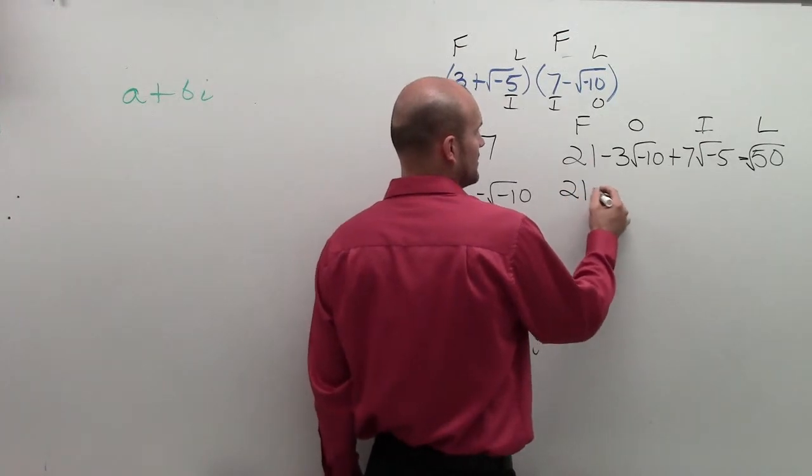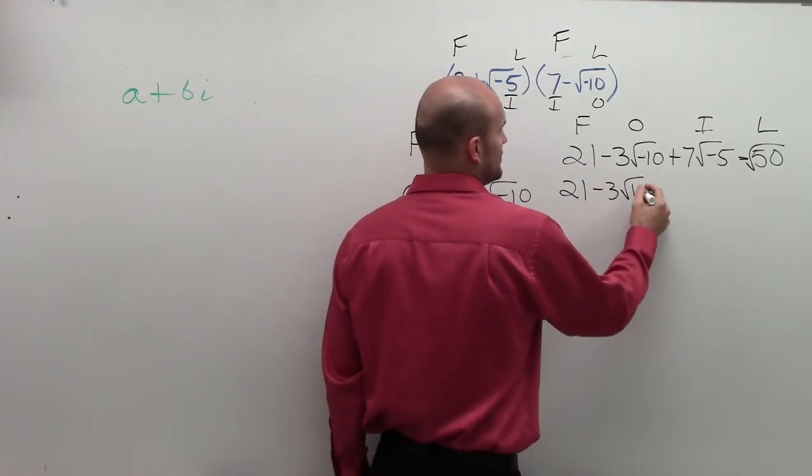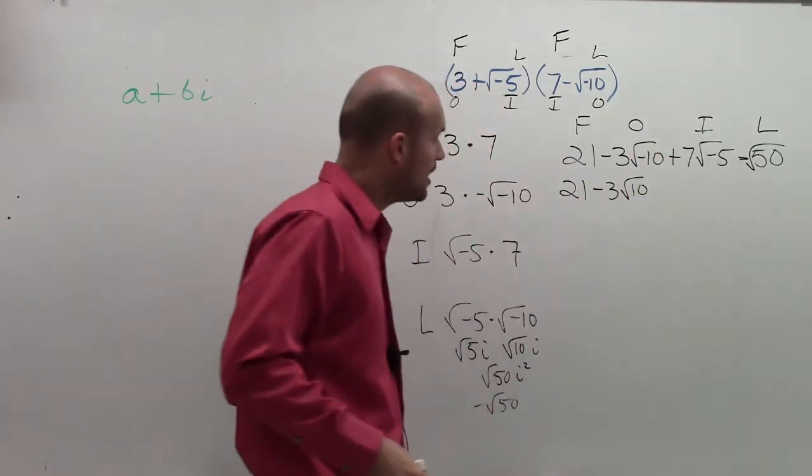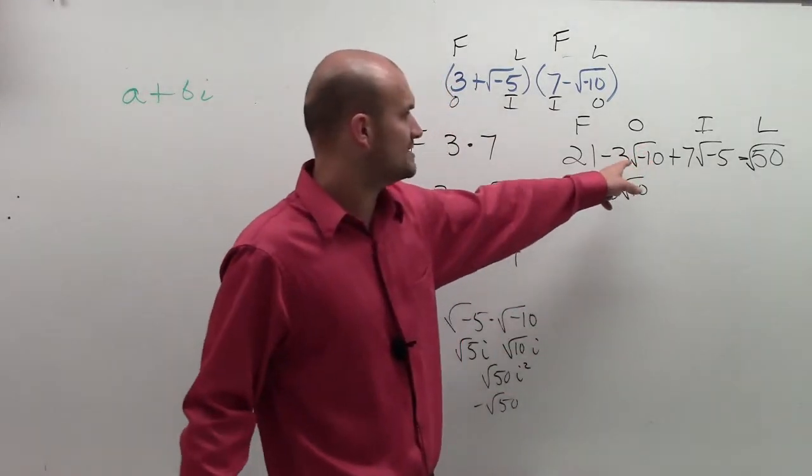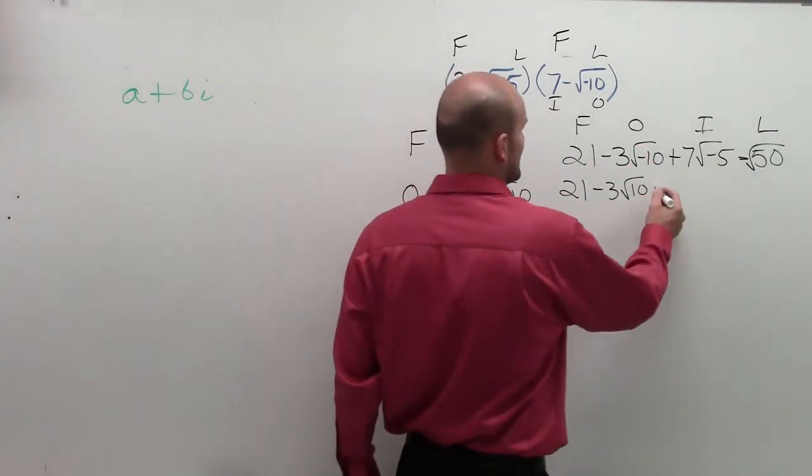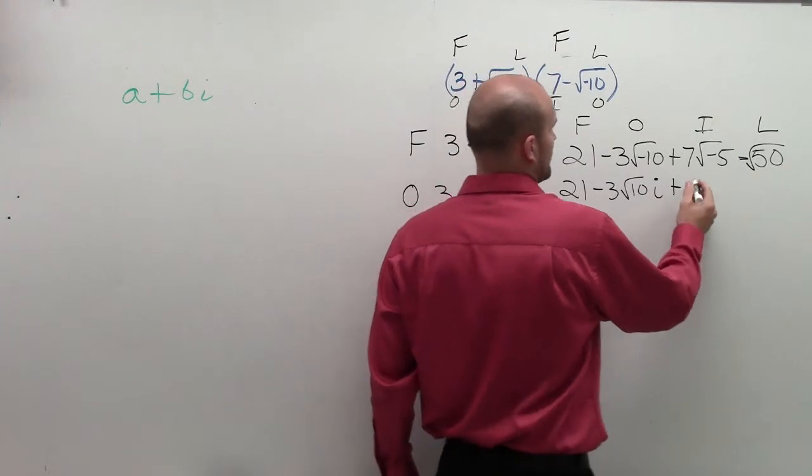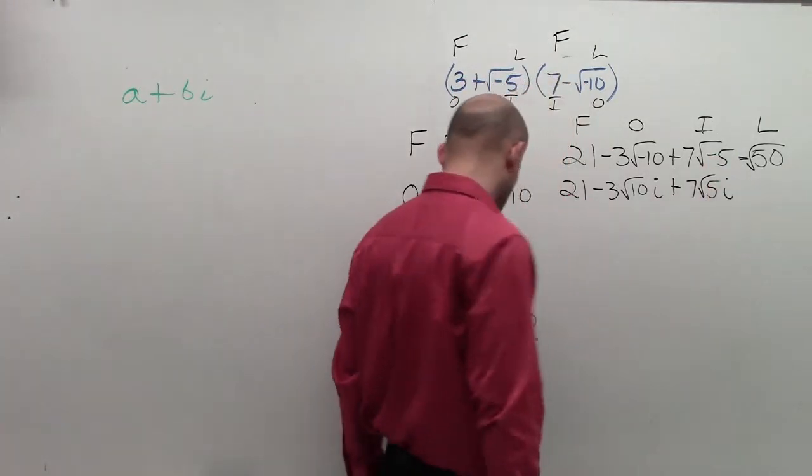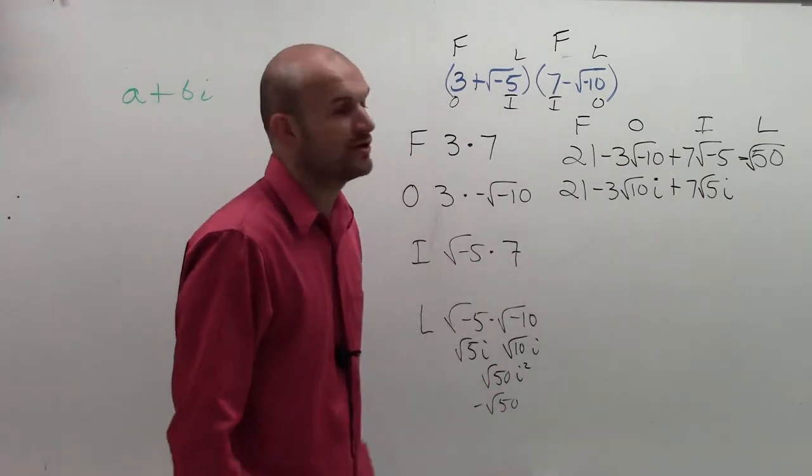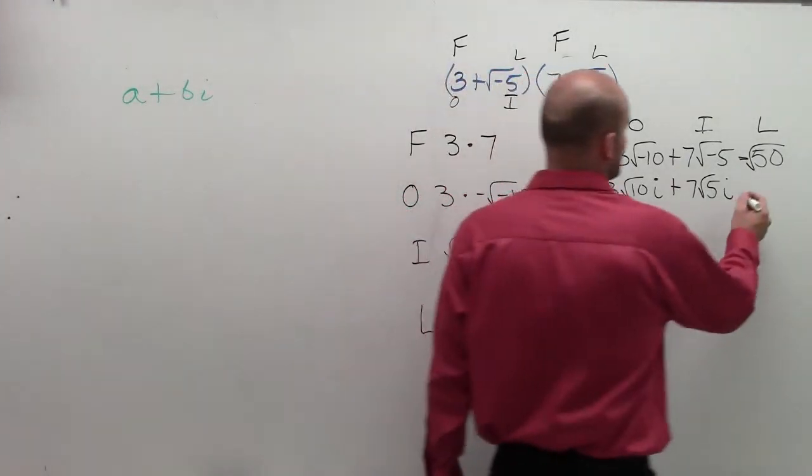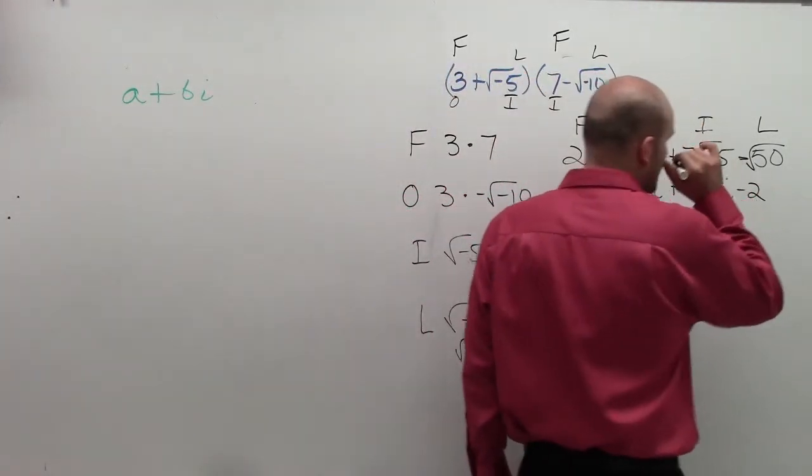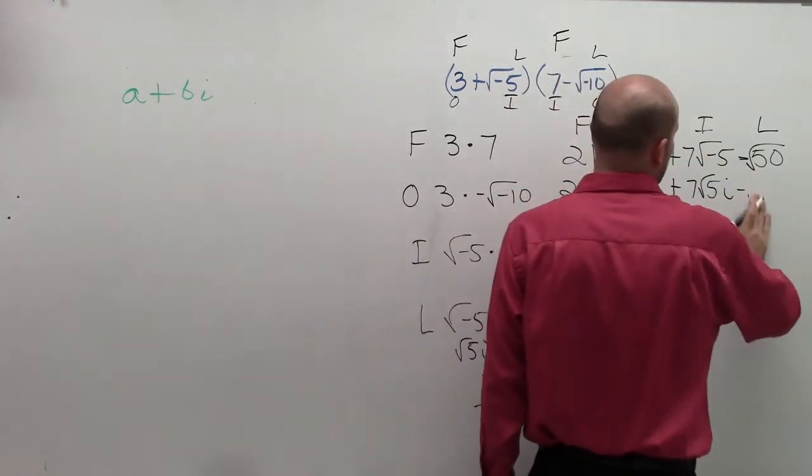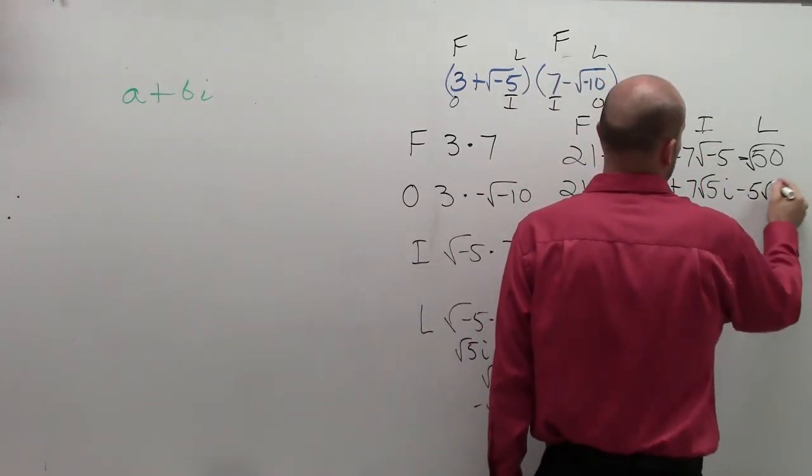I can rewrite that as 21 minus 3 square root of 10i plus 7 square root of 5i. And then the square root of 50, we can represent that as minus 5 square root of 2.